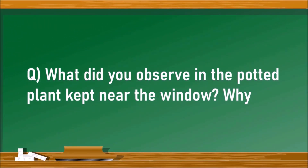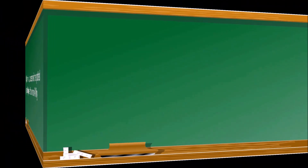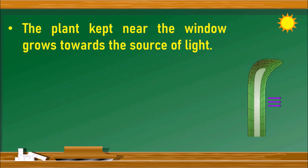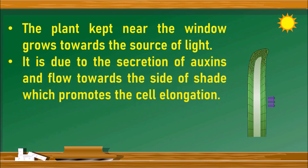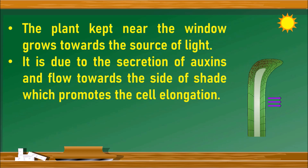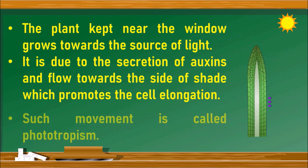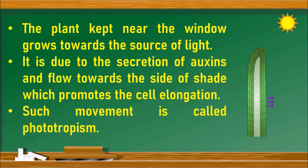What did you observe in the potted plant kept near the window, and why? The plant which is kept near the window grows towards the source of light. Observe the picture given here. It is due to the secretion of auxins and their flow towards the side of shade, which promotes cell elongation on that side. Hence it grows towards the source of light. Such movement is called phototropism.